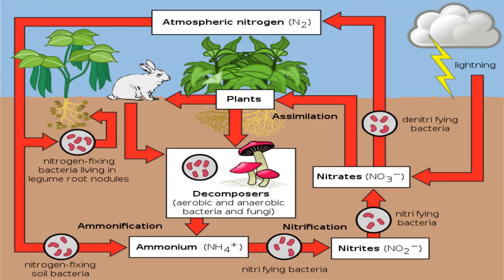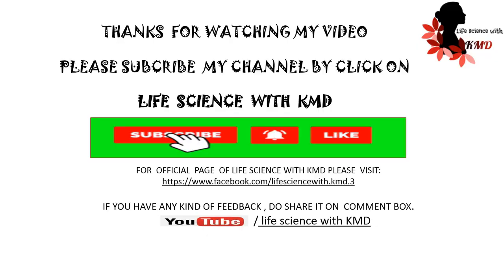Finally, in the nitrogen cycle, atmospheric nitrogen is fixed by lightning and converted into nitrates. These nitrates are assimilated by plants. These plants are consumed by animals. When both plants and animals die, they are decomposed by aerobic and anaerobic bacteria and fungi. Ammonification then takes place, producing ammonium. This ammonium is converted into nitrates through nitrifying bacteria. These nitrates are again fixed by assimilation through legume plants, and the cycle continues.